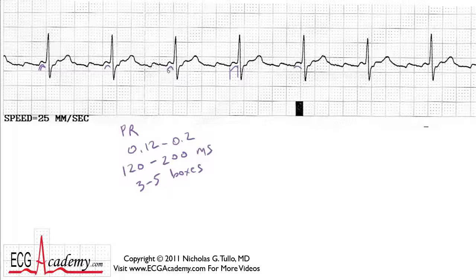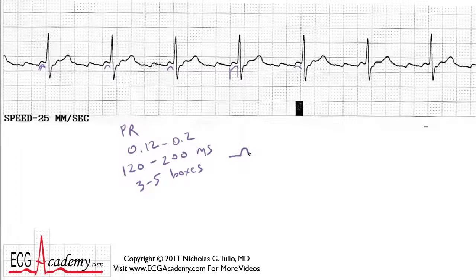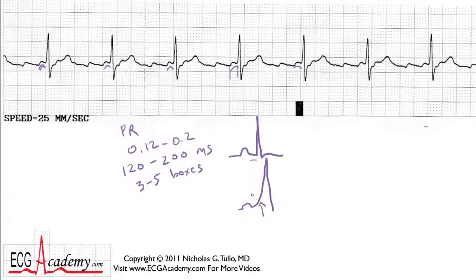So you'd have to call this sinus rhythm with a short PR interval. When you think of short PR intervals, there are a couple of syndromes that come to mind, like WPW syndrome, where instead of having a PR segment that's fairly flat, what you have is a delta wave — a slurred upstroke of the QRS complex and a very short PR. But that's not really what we're seeing here; we're seeing just a short PR interval.